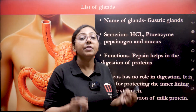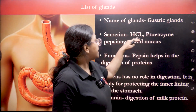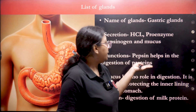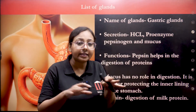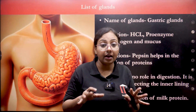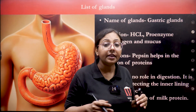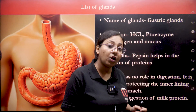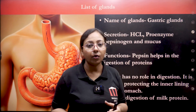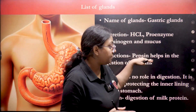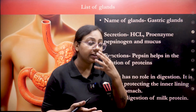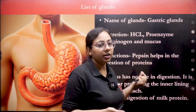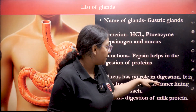Pepsinogen can only get activated and become pepsin when the medium is acidic. HCl makes the medium acidic so that pepsinogen can work properly. Since the stomach has an acidic medium, it could cause severe acid burn on the stomach walls, so mucus protects those walls. Once pepsinogen is activated into pepsin in the presence of HCl, it carries out the digestion of proteins.